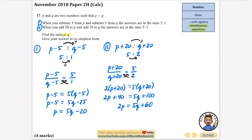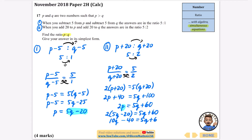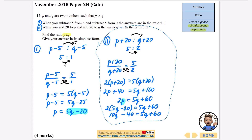Now I use substitution. I take p = 5q − 20 from the first equation and substitute it into 2p = 5q + 60. So 2(5q − 20) = 5q + 60, which gives 10q − 40 = 5q + 60.